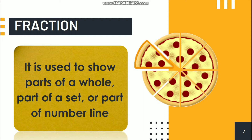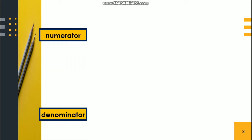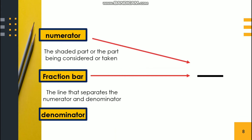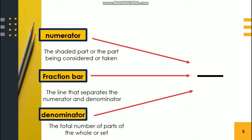Fraction is used to show parts of a whole, part of a set, or part of a number line. In writing a fraction, we have to consider three important parts: numerator, denominator, and a fraction bar. The fraction bar is the line that separates the numerator and denominator. The numerator is the number written at the top of the fraction bar — it is the shaded part or the part being considered or taken. The denominator is the number below the fraction bar; it refers to the total number of parts the whole is divided into.